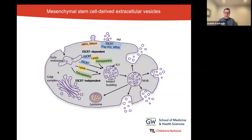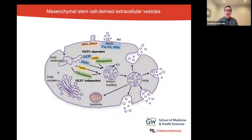Those extracellular vesicles are very important for cell communication. You can find them everywhere — not just in the human body, but also in food and milk. There are studies where extracellular vesicles are isolated from milk to use them for treatment of autoimmune conditions. It's a very fascinating field that is now evolving. We didn't know a lot about EVs, but for the past 20 years this area of research has exploded.